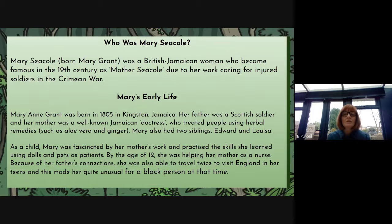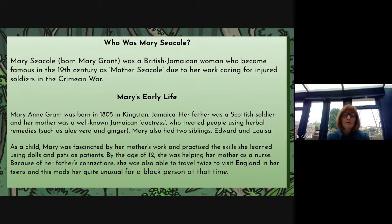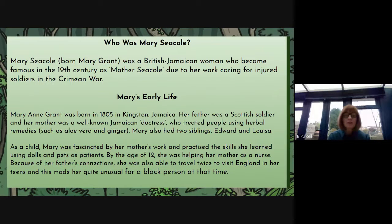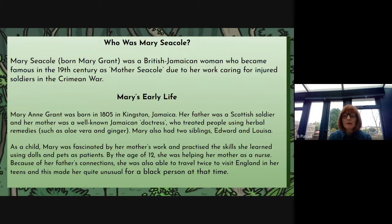You could expand on that sentence saying how old they were — were they older than her, were they younger than her, was she close to them? As a child, Mary was fascinated by her mother's work and practised the skills she learned using dolls and pets as patients. By the age of 12 she was helping her mother as a nurse. Because of her father's connections she was also able to travel to visit England in her teens, which made it quite unusual for a black person at that time — black people didn't really travel much and it was quite unusual to see a young black person travelling.